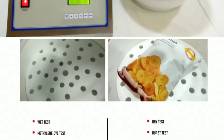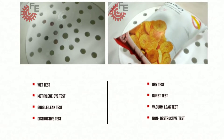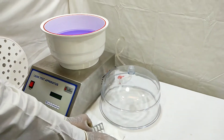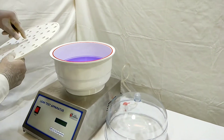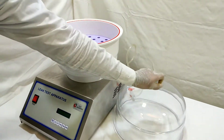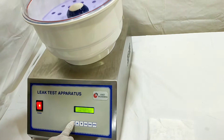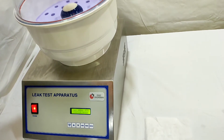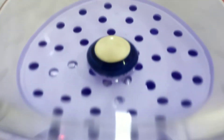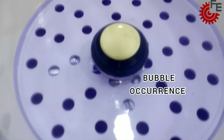Fixit Engineering's automatic leak test apparatus is designed to comply with several testing methods and principles. Most commonly, it is used to perform the methylene dye leak test as per FDA guidelines and ASTM D307A. Bubble occurrence indicates a leak in the specimen.